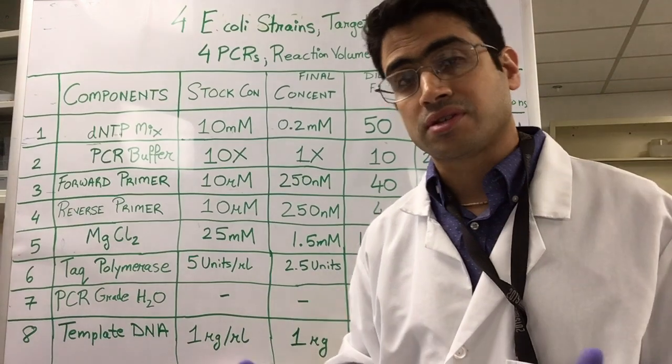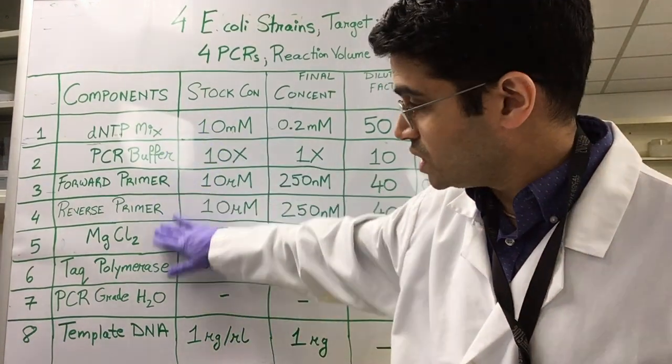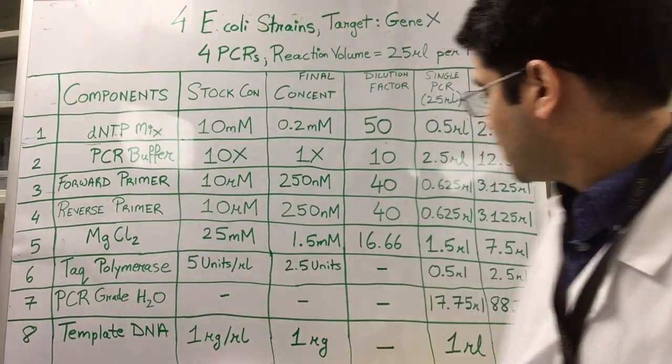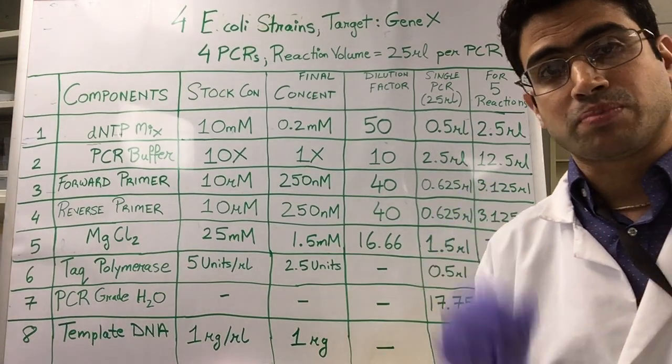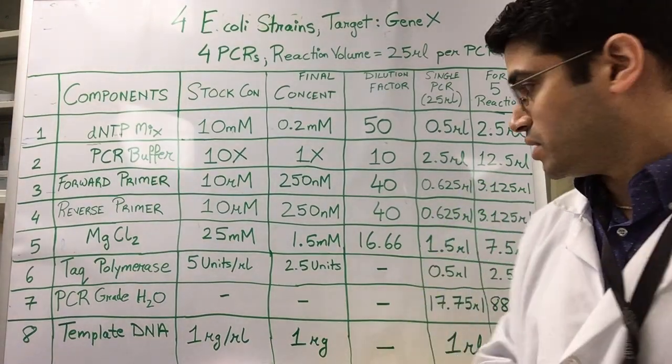I have used the same logic to calculate the volumes for each of the remaining ingredients and that's shown over here in this column. So this is a column for a single PCR tube of 25 microliters.